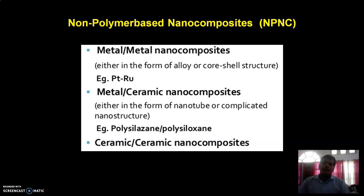These are metal-metal nanocomposites. They are either in the form of an alloy or a core-shell structure. For example, platinum-ruthenium nanocomposite material. Another example is polysiloxane nanocomposite materials, and polysiloxane-polysiloxane nanocomposite materials.